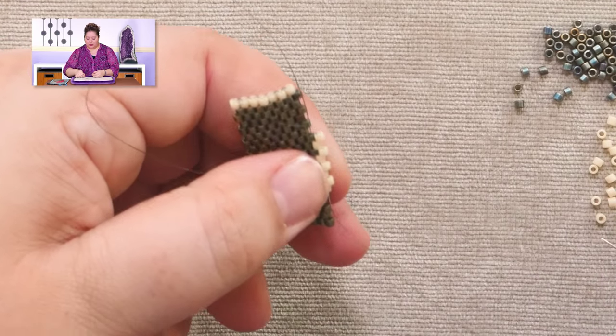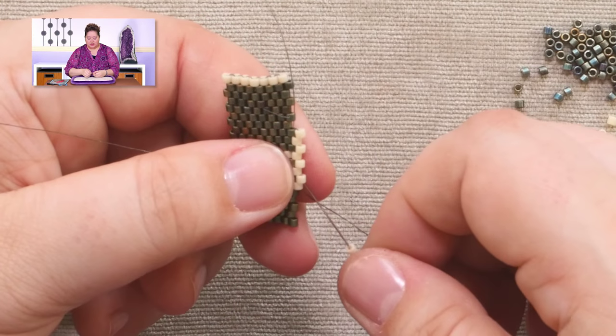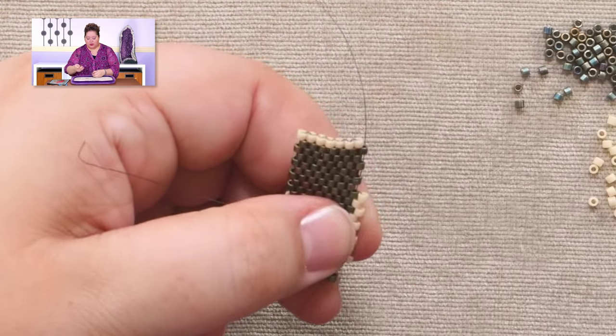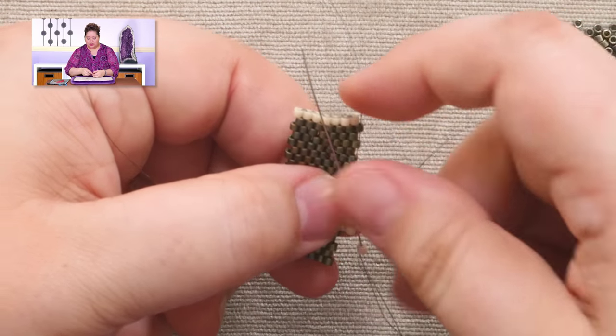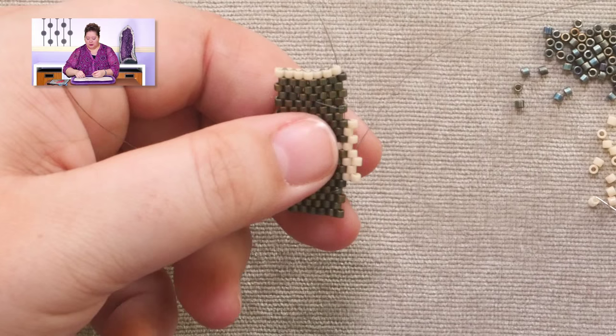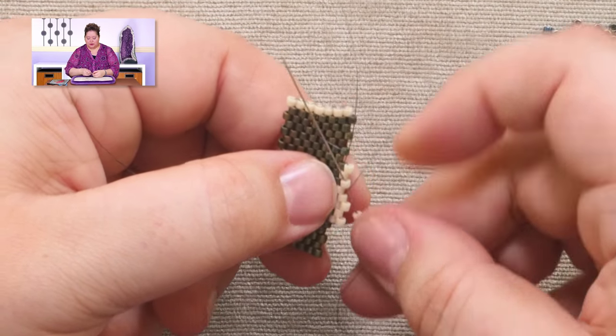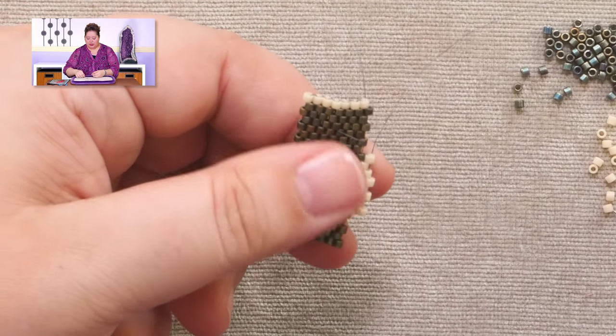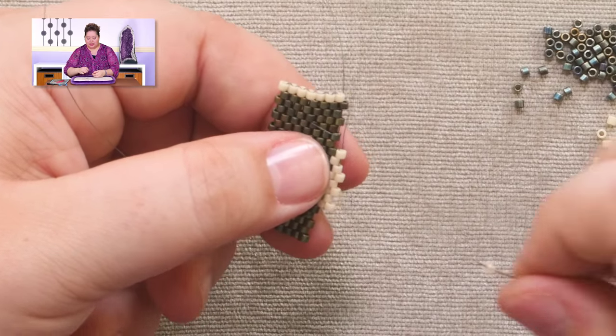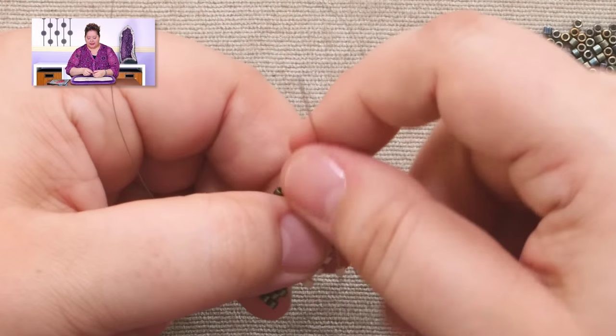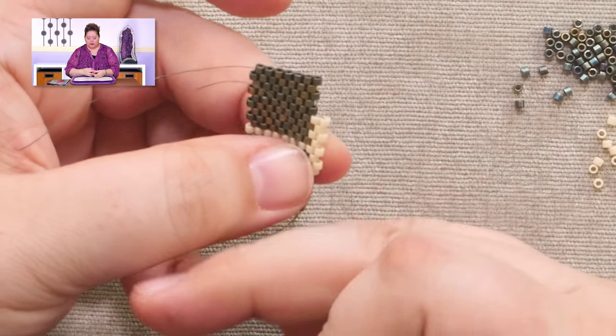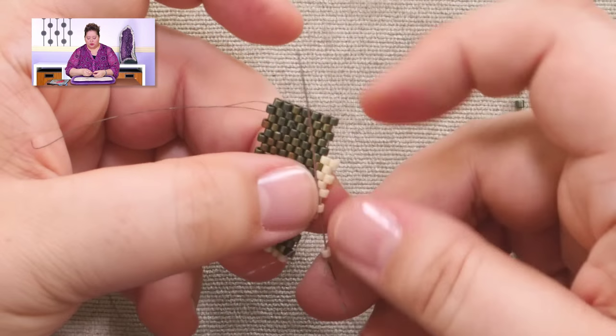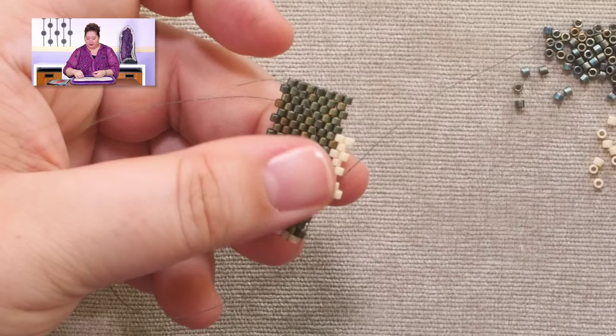I suggest you do a good four or five rows before you try to disengage it from your starter strip. You want to have enough to hold on to when you keep going. And you also want to make sure that in disengaging it, you don't accidentally pull it apart. So, if you've got it a little farther down the road when you do this, it'll be much easier.